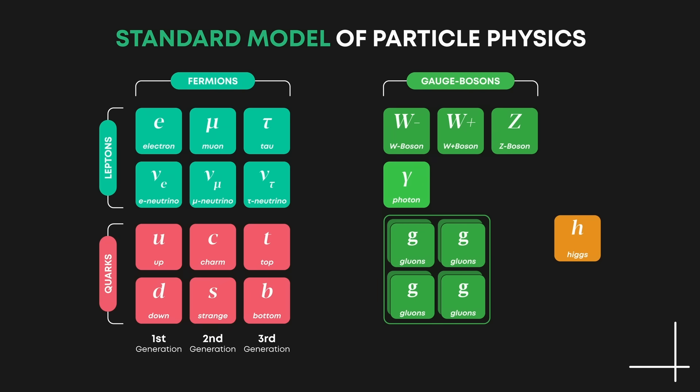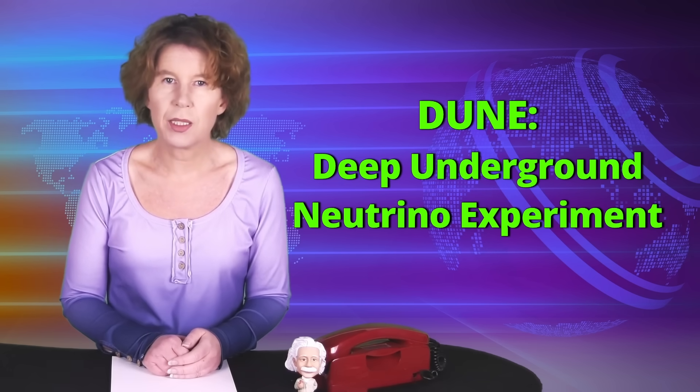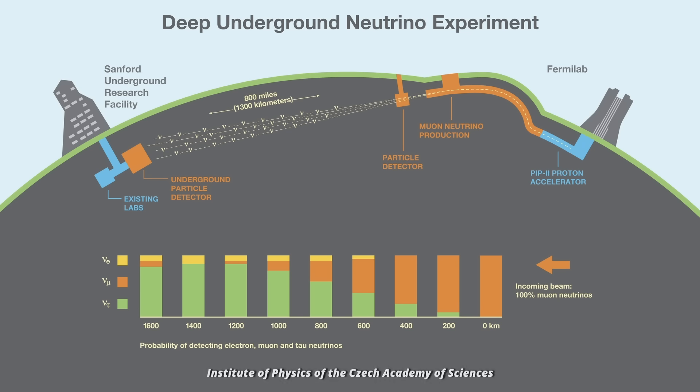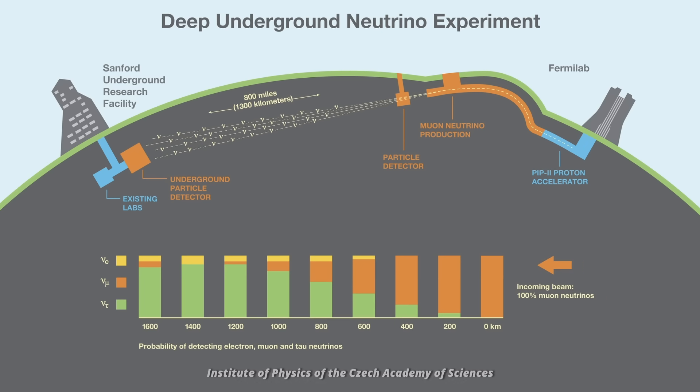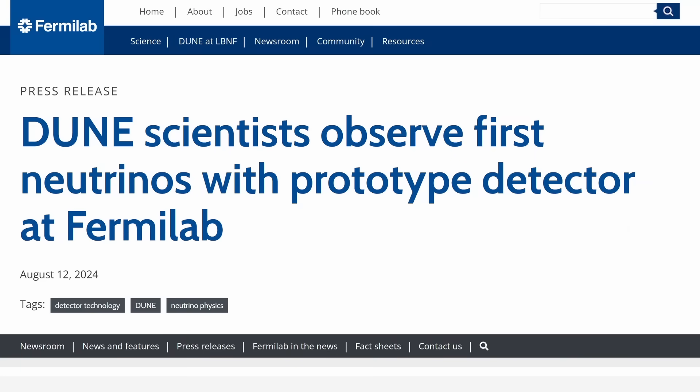Its experimental collaborations discovered the top quark, the heaviest of the quarks, in 1995. Fermilab's new flagship project is DUNE, the deep underground neutrino experiment. Its task is to shoot a beam of neutrinos through the Earth's crust from Fermilab to Sanford lab in South Dakota, about 1,300 kilometers away. Last year in the summer they observed the first neutrinos with a prototype detector.